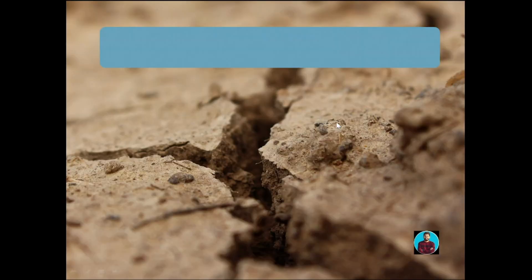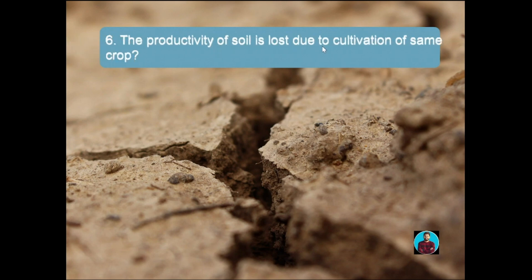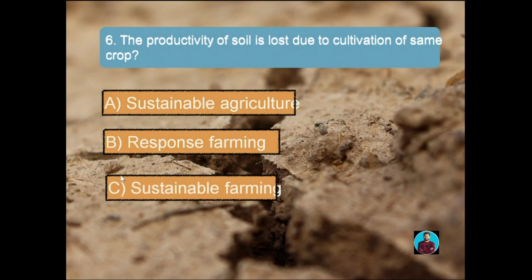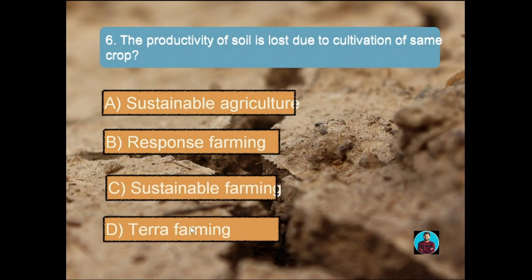Question number six: the productivity of the soil is lost due to cultivation of the same crop — this is called? Option A: Sustainable agriculture, Option B: Response farming, Option C: Monoculture farming, Option D: Terraforming. The right answer is monoculture farming. Sustainable agriculture maintains soil fertility and ecological harmony. Response farming refers to the production of monoseason crops. Terraforming is to develop the land according to Earth's environment.